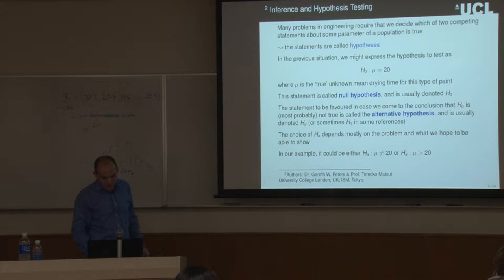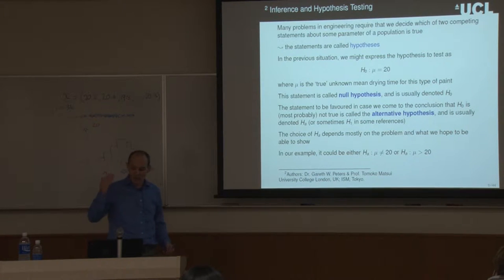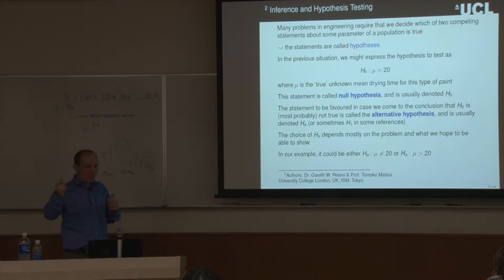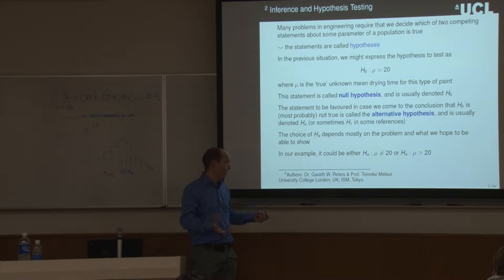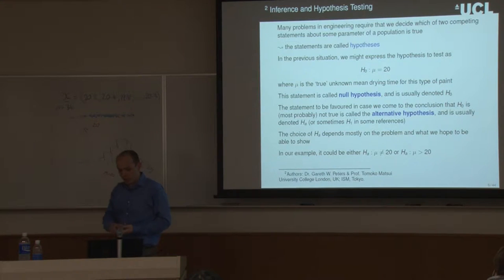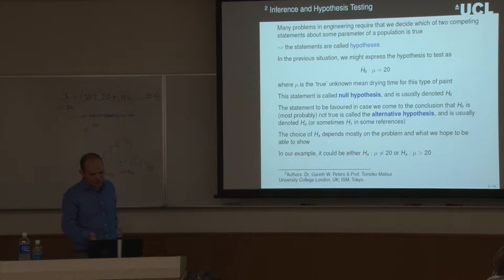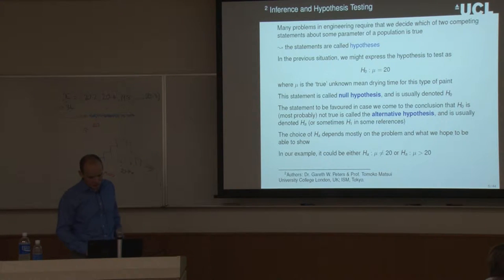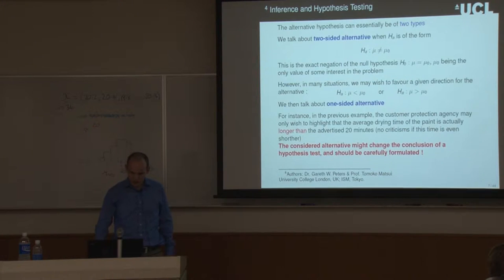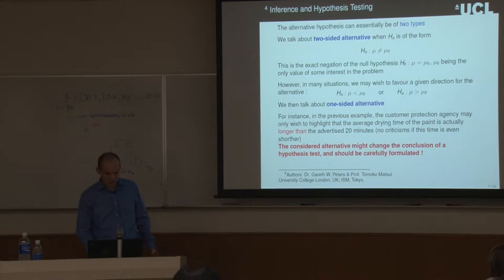We have the null hypothesis that mu equals 20. We can either test a two-sided alternative — mu is not equal to 20 — or a one-sided test. In this example, we want to test whether the manufacturer is overselling their product, so we look at the right tail with the alternative hypothesis mu greater than 20. This is a one-sided test.